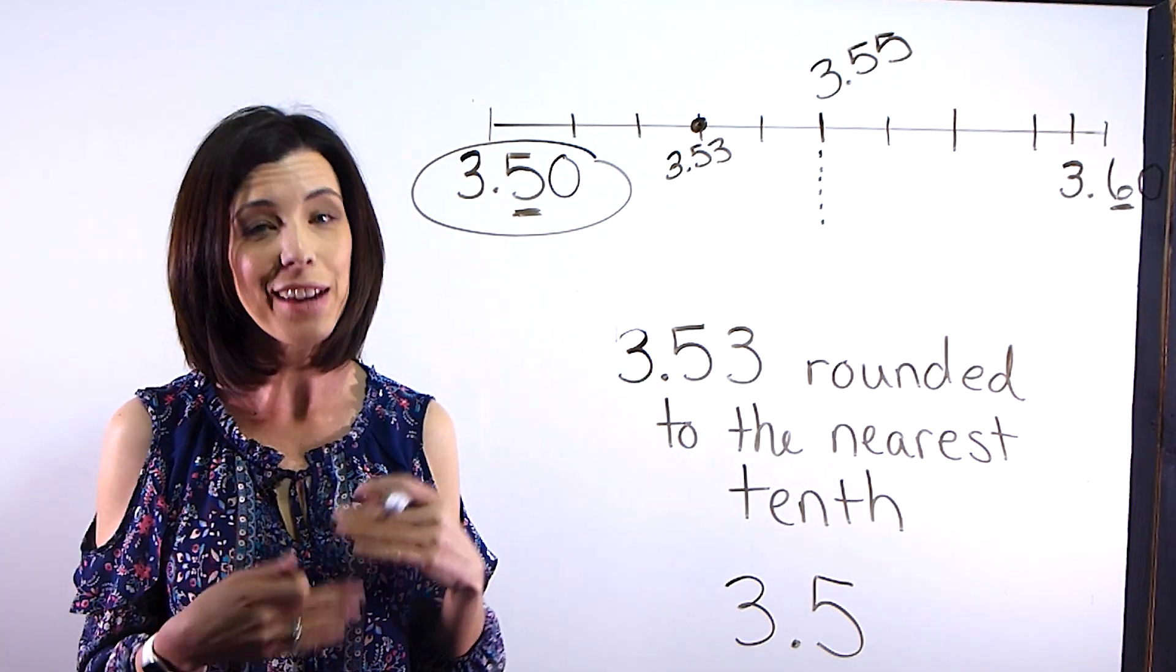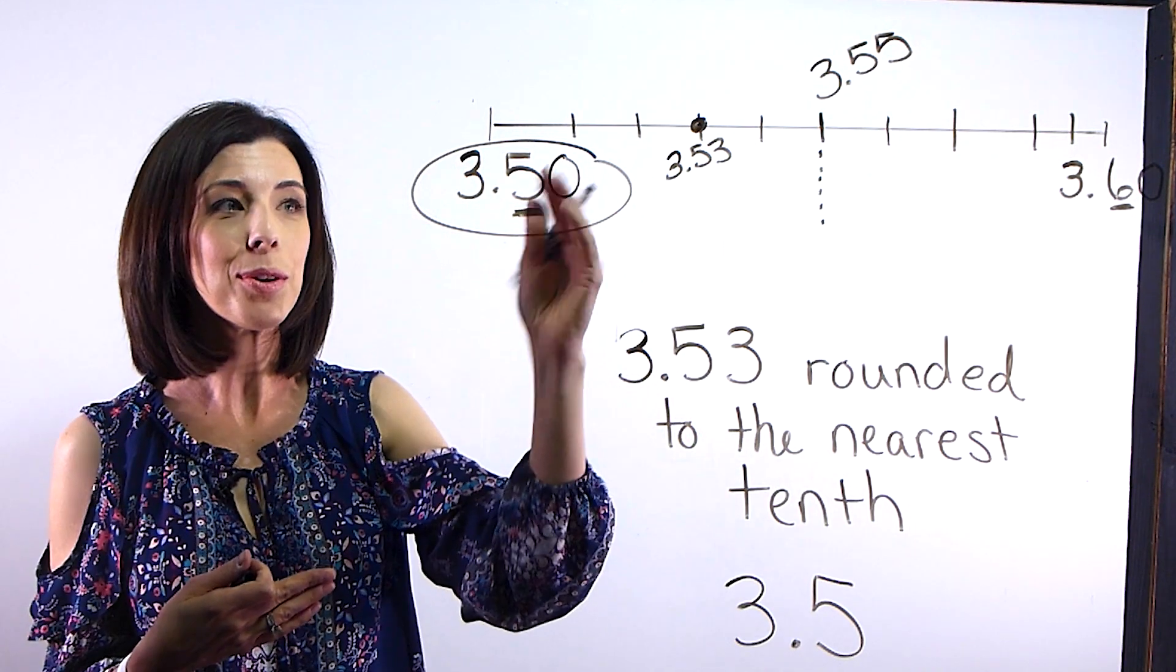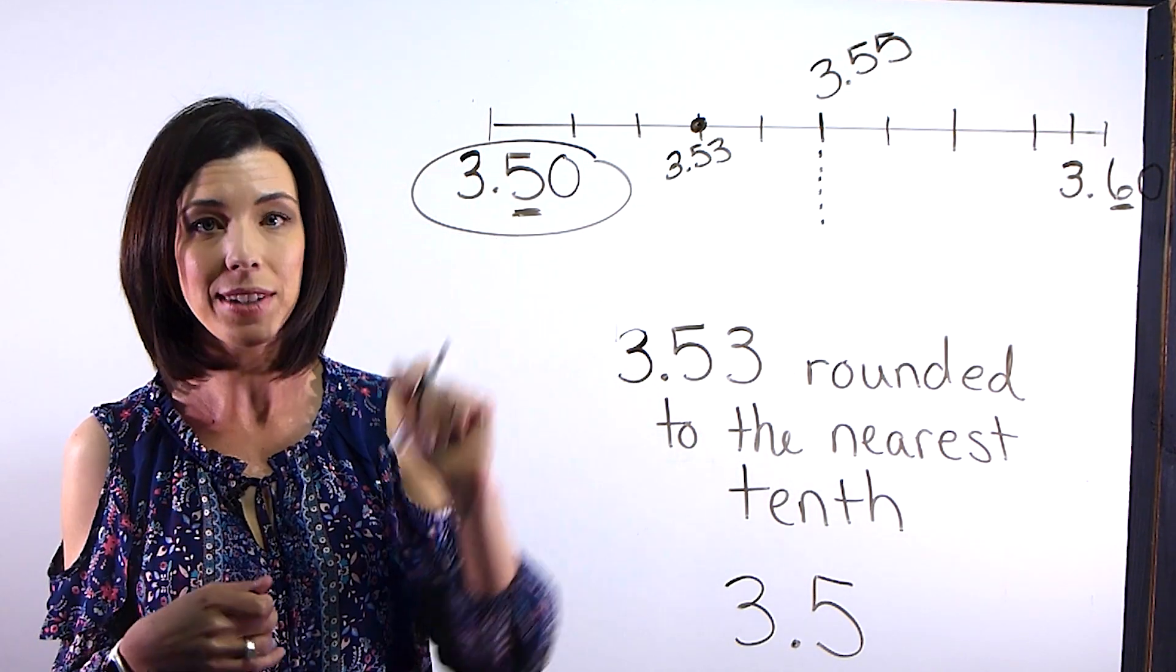Which is why we say if it's 5 or higher, round up. If it's 4 or lower, it stays the same or round down.